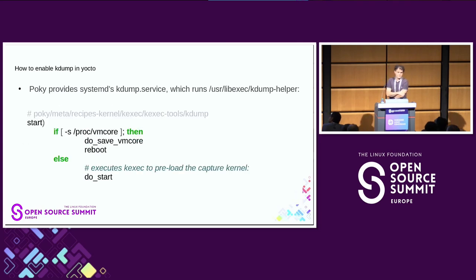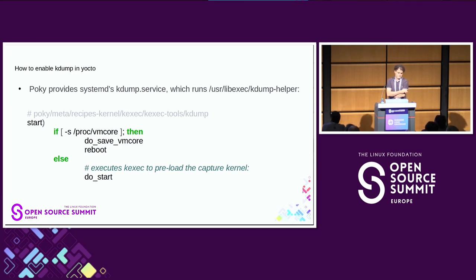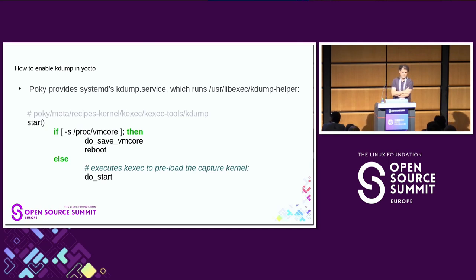Typically you would not load the capture kernel manually, but rather rely on the kdump service available in Yocto, which uses a script called kdump-lib-helper. This script has two roles: it preloads the capture kernel when you boot your normal kernel, and it's also active when running in the capture kernel. It knows you're in the capture kernel because it detects the presence of the file /proc/vmcore, and then post-processes that vmcore file.